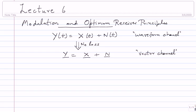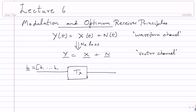Let me describe modulation once again. The transmitter takes n bits — specifically n data bits. If you have n data bits, how many different possibilities are there? Two to the power n possibilities.